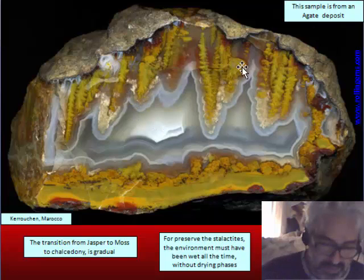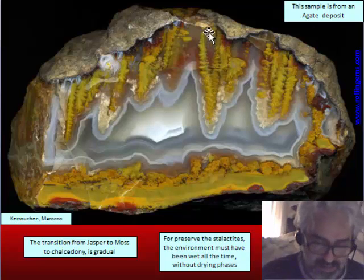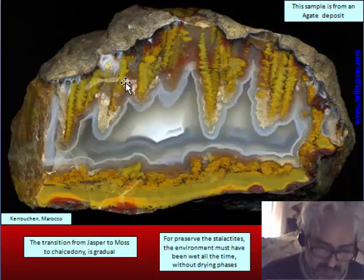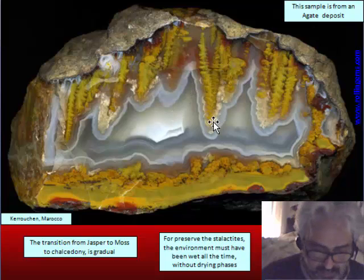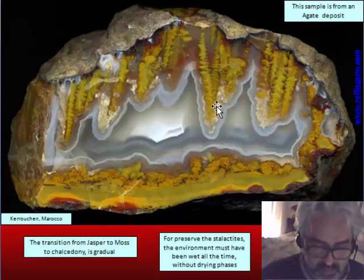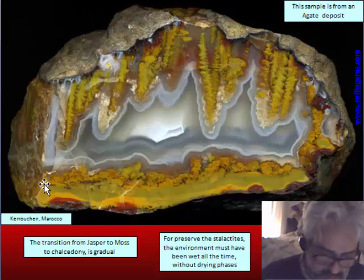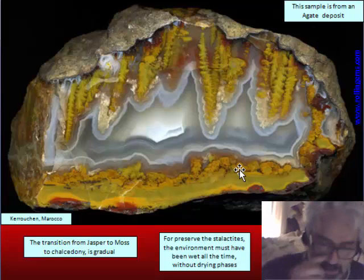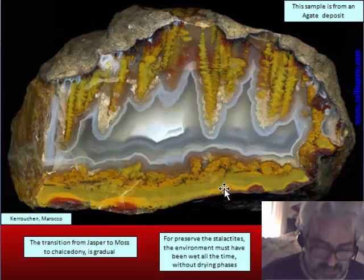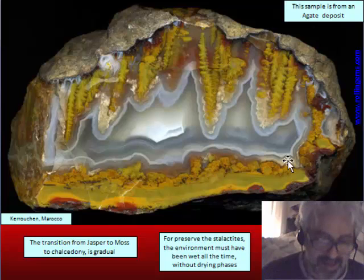We also know that for stalactites to be preserved in this state — because they are very fragile structures — the nodule must have always been filled by solution. If there had been an event of drying or desiccation of the nodule, these structures would have broken down, with many fragments at the base and desiccation cracks. So we are sure that this nodule was never completely dried, and the change from jasper to moss to chalcedony is transitional during the same continuous process.